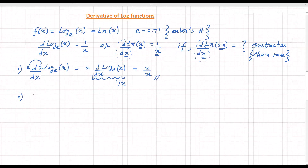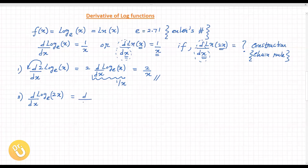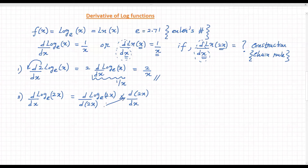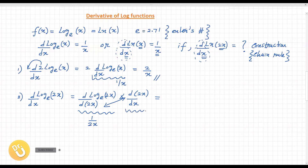Second example: d/dx of log base e of 2x. Here you have to construct the chain rule. You introduce 2x as the variable of the differential operator, so you write d(2x)/d(2x) and then the original dx. This is the chain rule. The first part gives 1 divided by 2x, and the second part gives 2 (derivative of 2x). So the answer is (1/2x) × 2 = 1 divided by x.